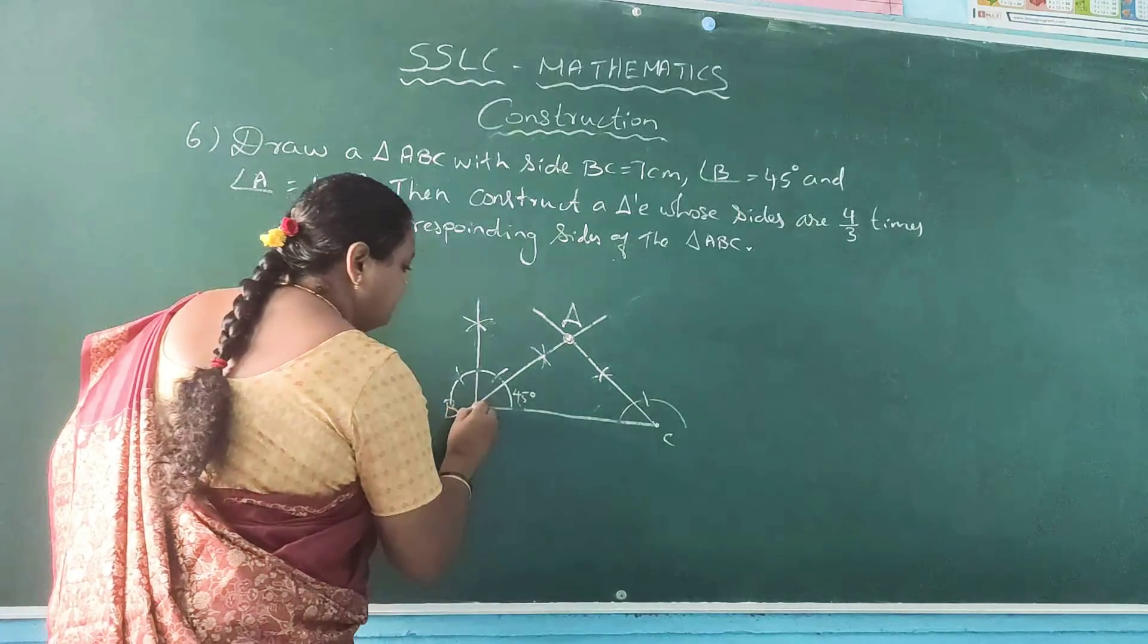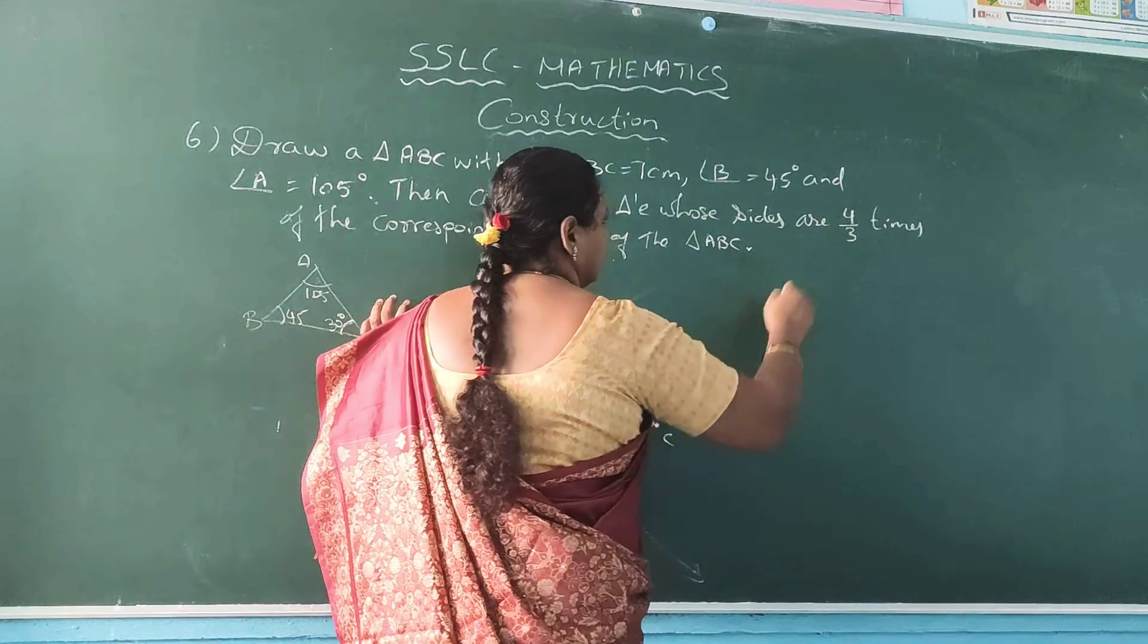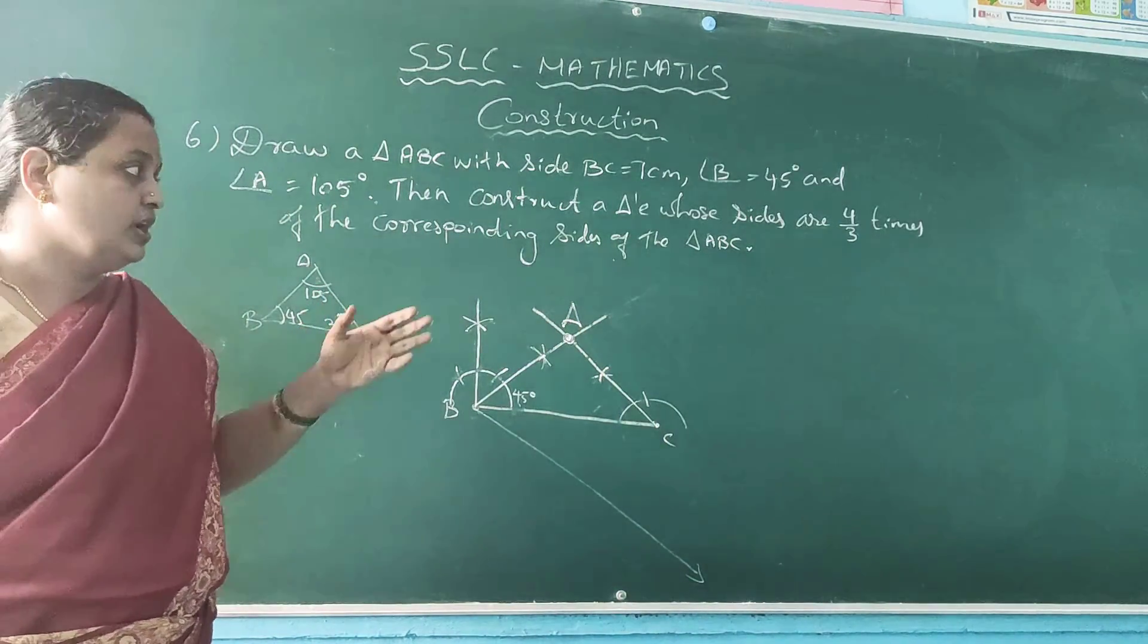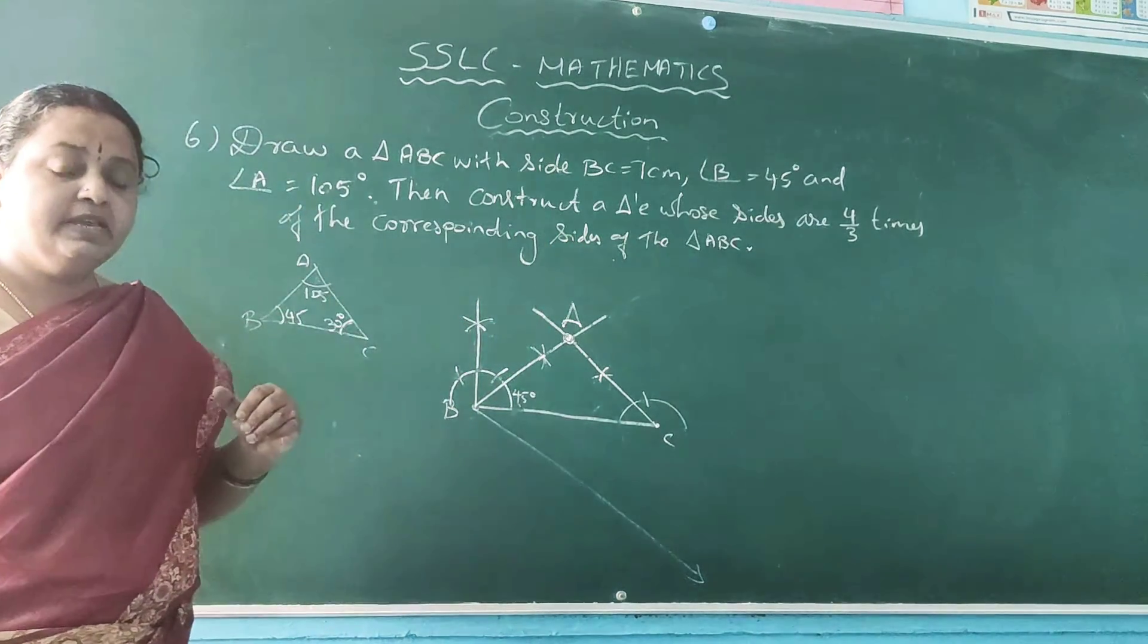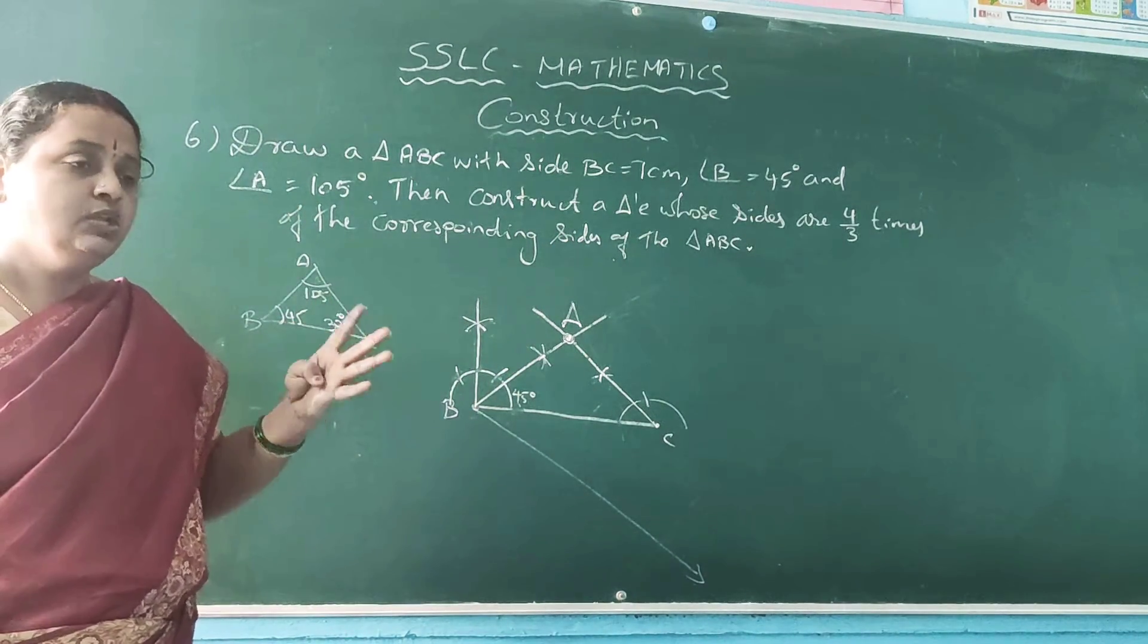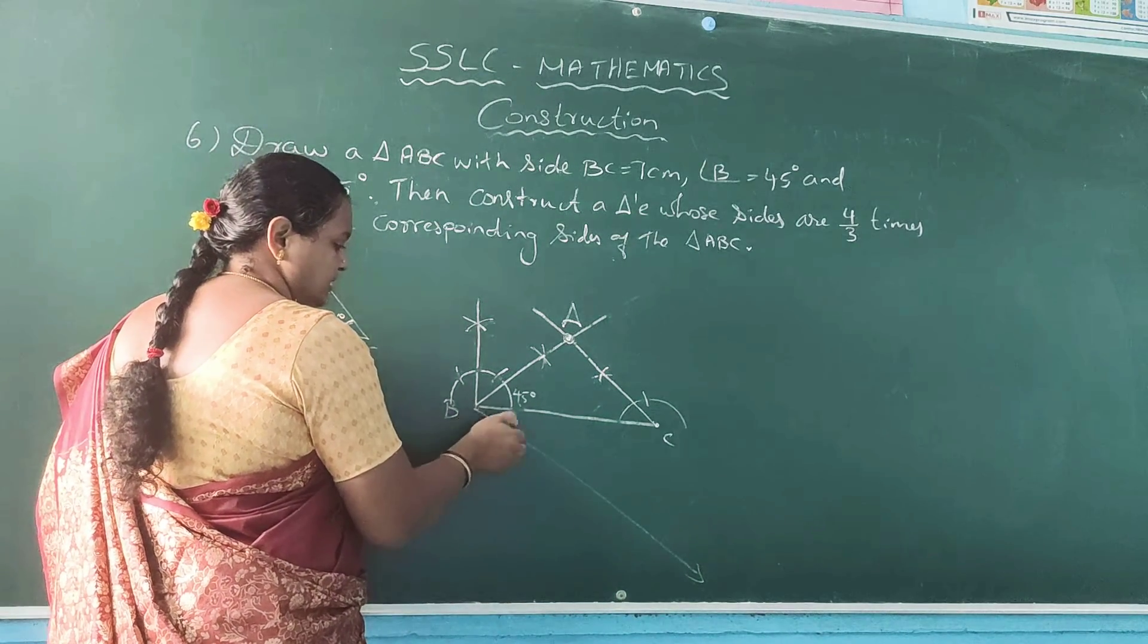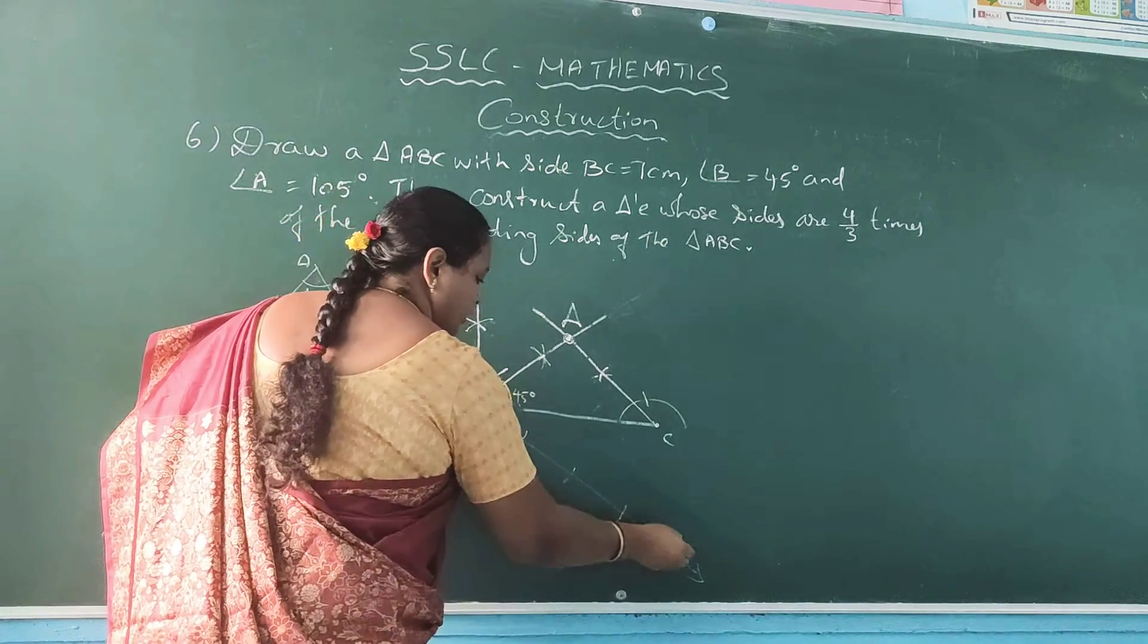So what is the ratio? 4 by 3. Here one more method I will explain without adding the ratio. So here 4 by 3, which is the bigger number? 4 is the bigger number. So 4 equal parts you can divide. With equal measurement 4 equal parts: 1, 2, 3, 4. D1, D2, D3, and D4.